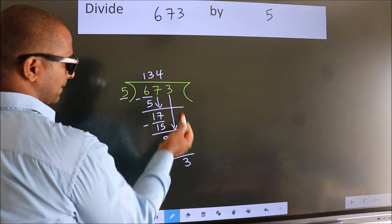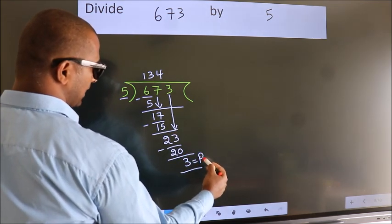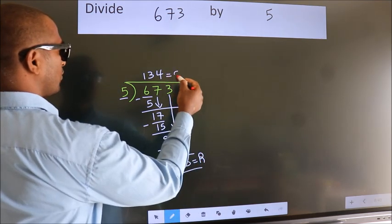No more numbers to bring it down. So we stop here. This is our remainder. This is our quotient.